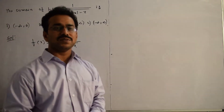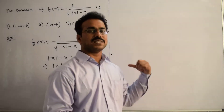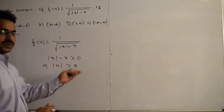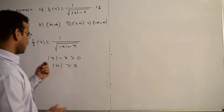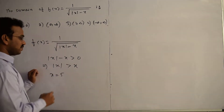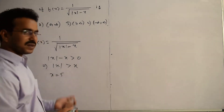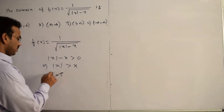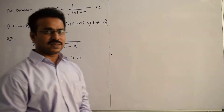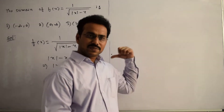We need to find for what values of x this inequality is satisfied. If we take positive real numbers — for example x = 5 — then |5| = 5, and 5 is not greater than 5. So positive real numbers can never satisfy this inequality.